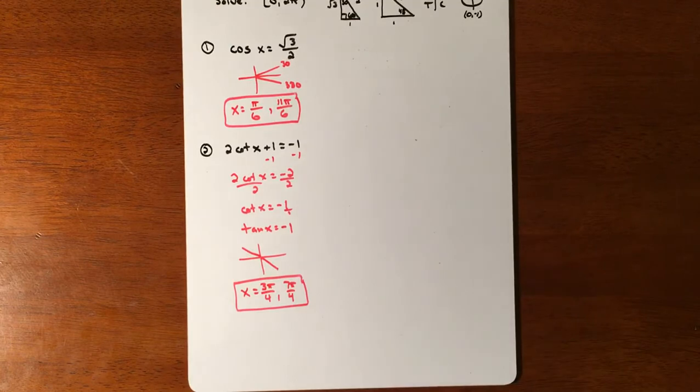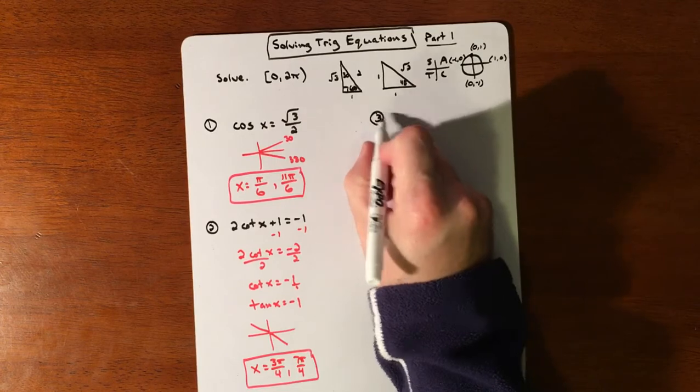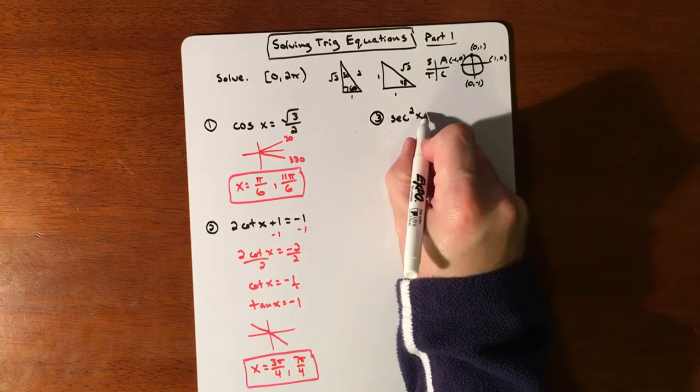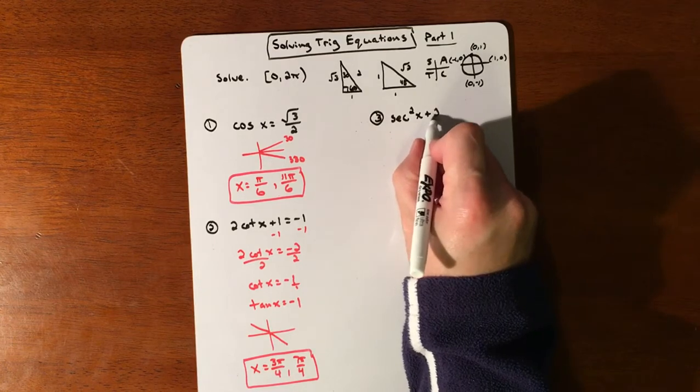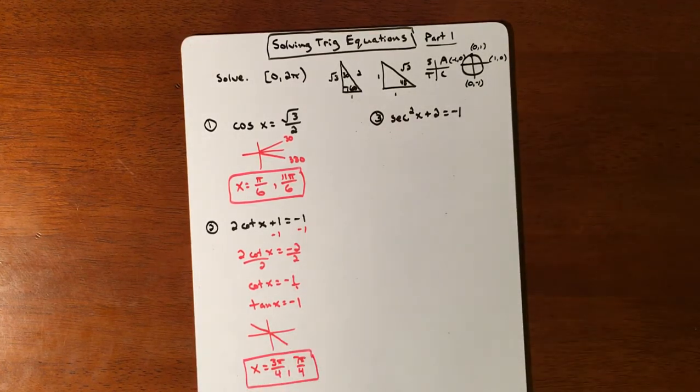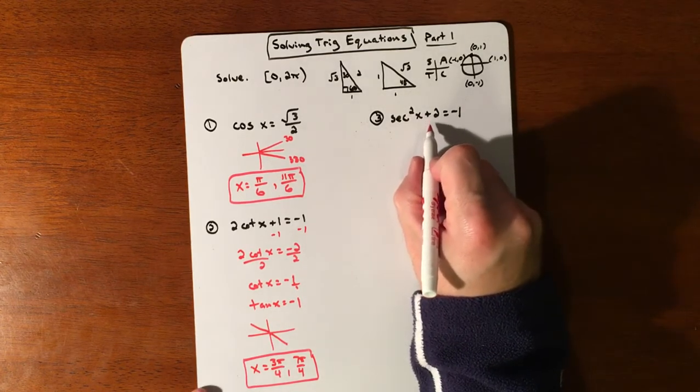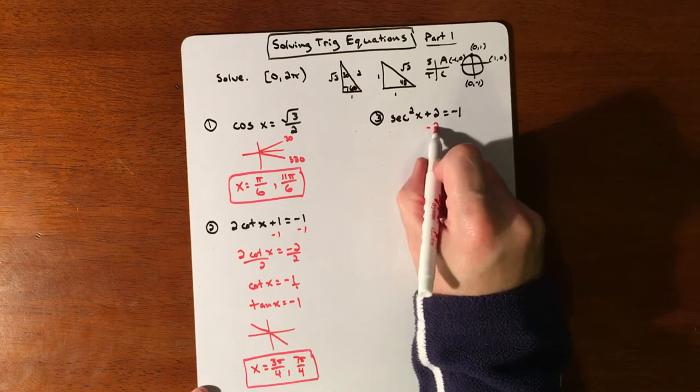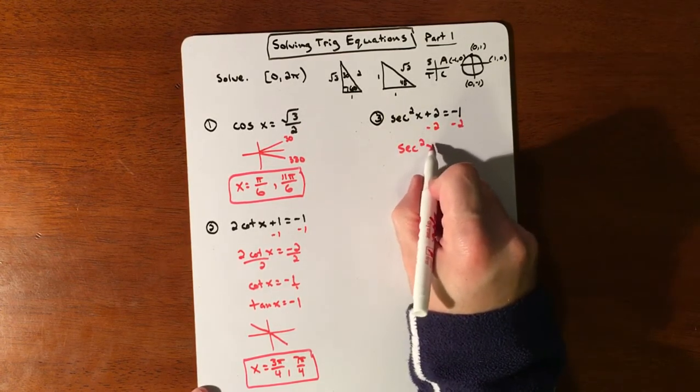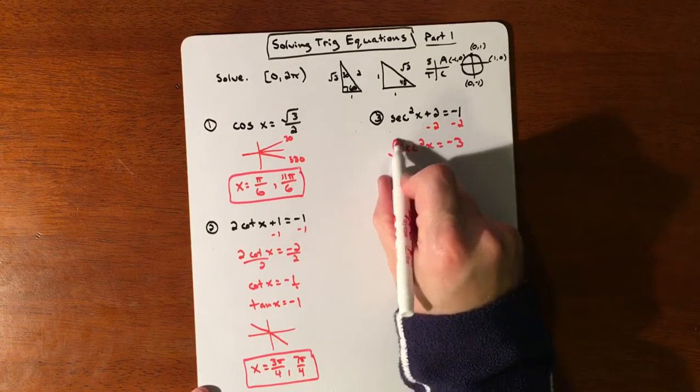We'll do one more. What if we have secant squared x plus 2 equals negative 1. If we try to get this stuff all by itself, we're going to subtract 2. So we're looking at secant squared x is going to equal negative 3. To get rid of the square, we're going to square root.